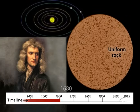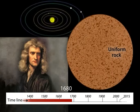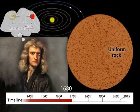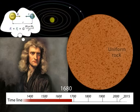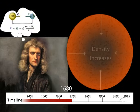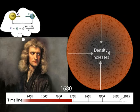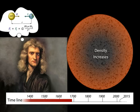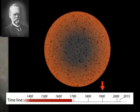Two hundred years later, Sir Isaac Newton, studying our planetary system, calculated that the interior of the Earth must be made of far denser material than the surface rock. Newton's estimate of the overall density of the Earth remains essentially unchanged today.